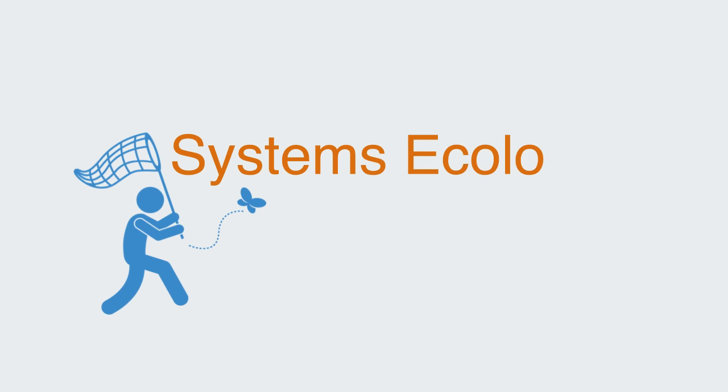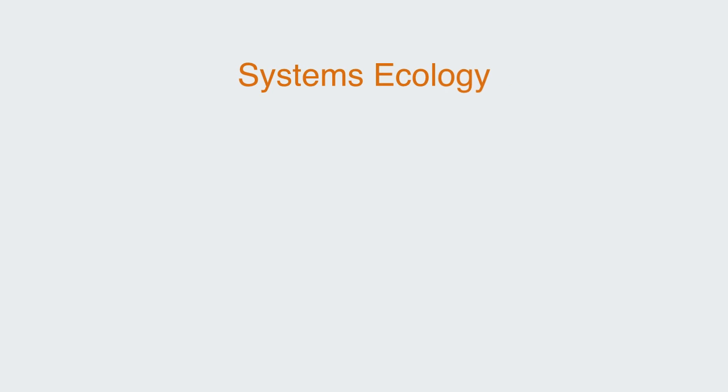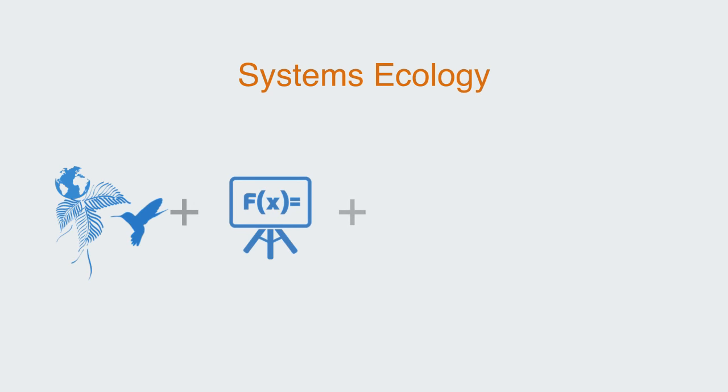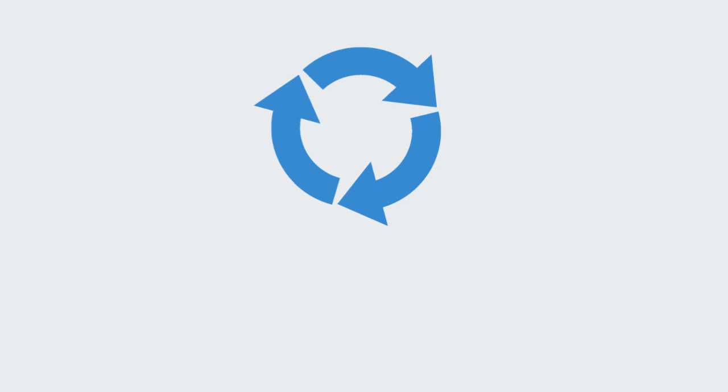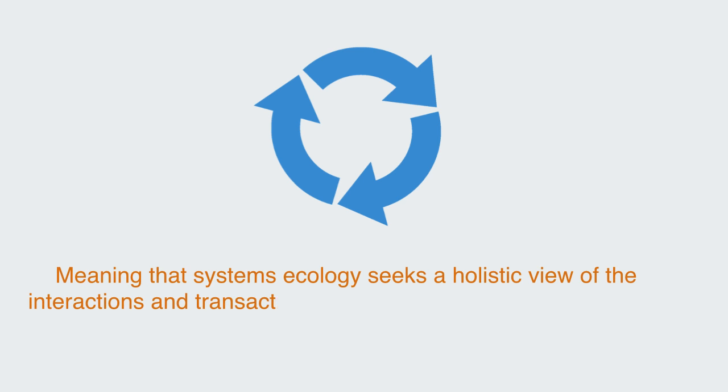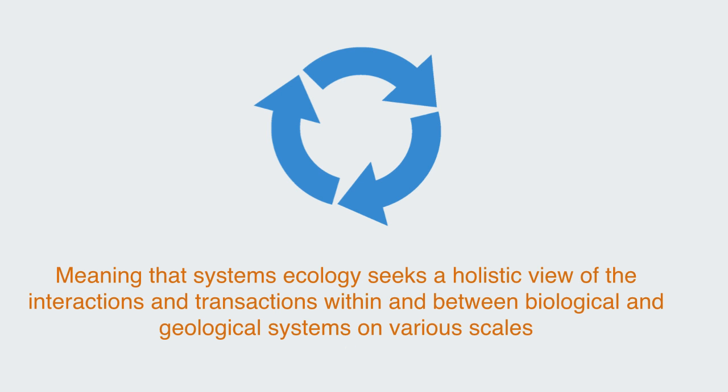Systems ecology is the study of ecosystems that uses mathematical modeling, computation, and as the name implies is based upon systems theory. As with other areas of system science, the use of systems theory as an approach involves the adoption of a holistic paradigm based around synthetic reasoning. Systems ecology seeks a holistic view of the interaction and transactions within and between biological and geological systems on various scales.